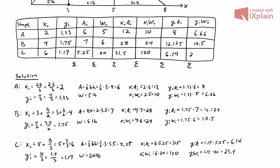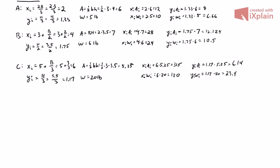Now we sum the columns. Sum of areas: 6 + 7 + 5.25 = 18.25. Sum of weights: 5 + 6 + 20 = 31. Sum of x×A: 12 + 28 + 31.5 = 71.5. Sum of x×W: 10 + 24 + 120 = 154. Sum of y×A: 8 + 12.25 + 6.14 = 26.27 (with some rounding). Sum of y×W: 6.66 + 10.5 + 23.4 = 40.56.